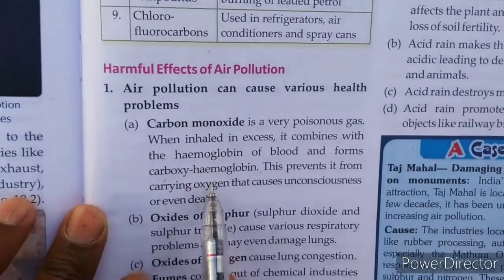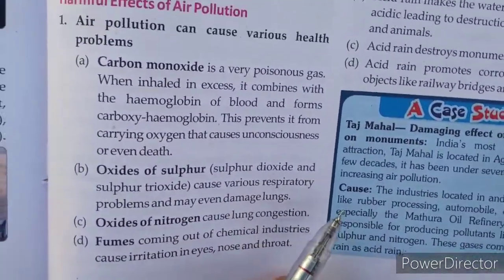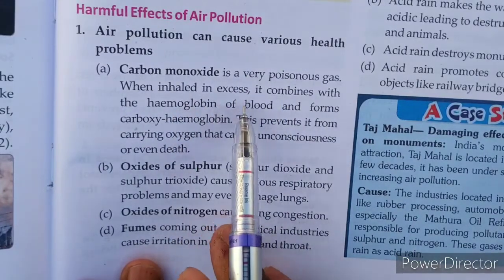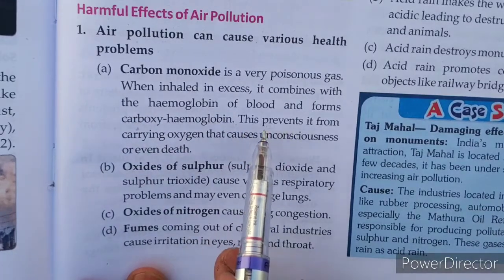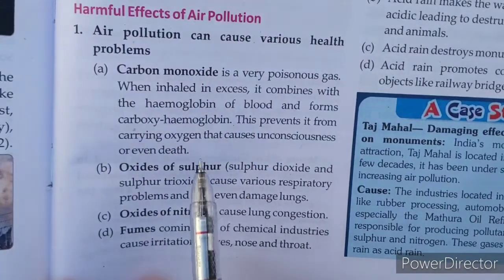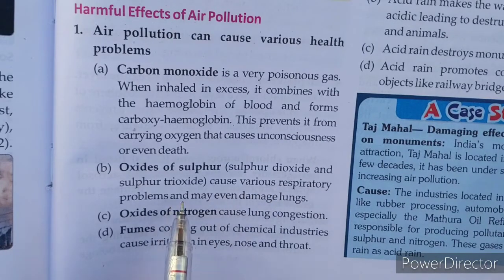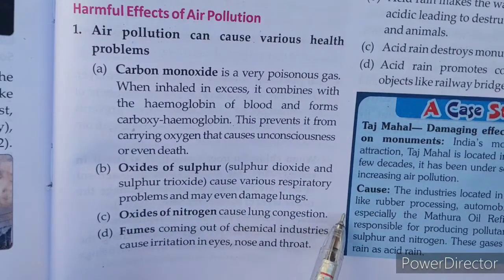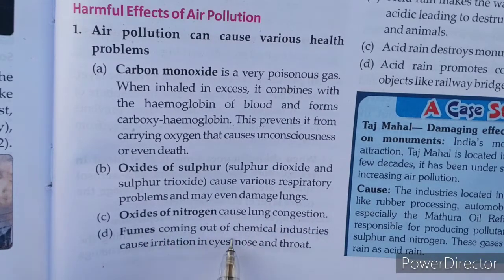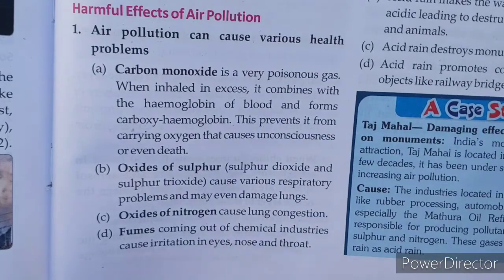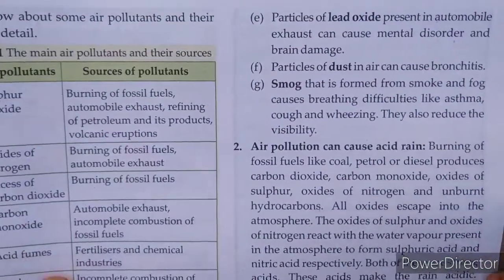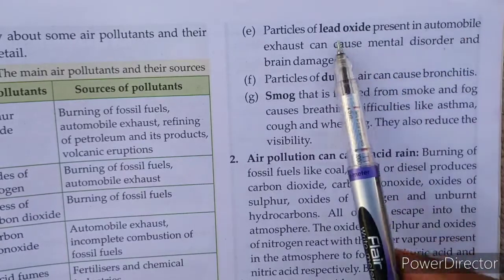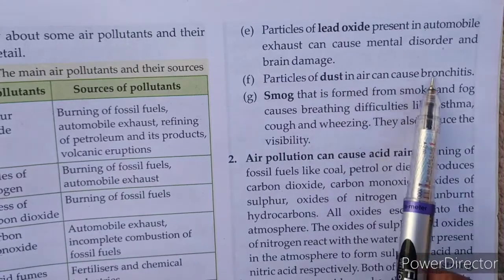Harmful effects of air pollution: Carbon monoxide is a poison gas. Oxides of nitrogen cause congestion and chemical irritation of the nose and throat. Particles of lead oxide in automobile exhaust can cause mental disorder and brain damage. Particles of dust in air can cause bronchitis.